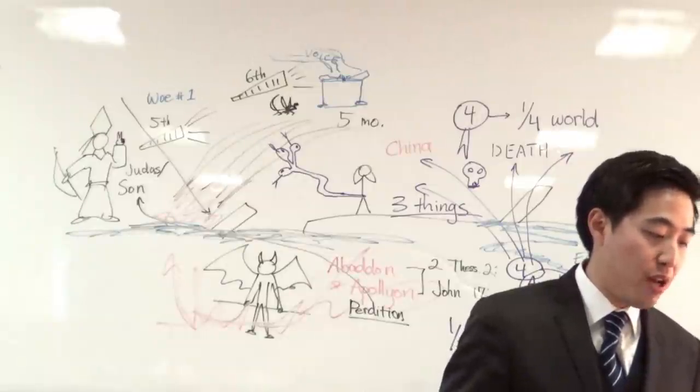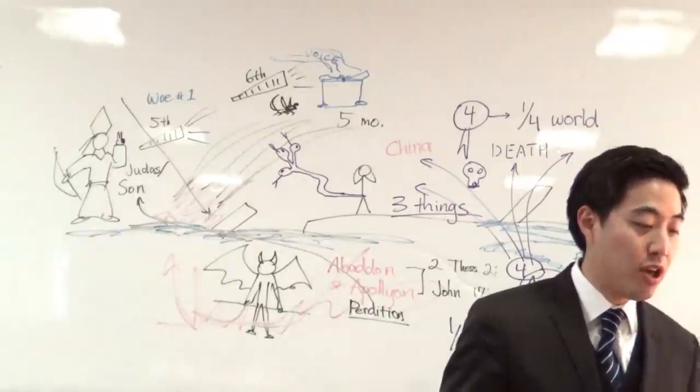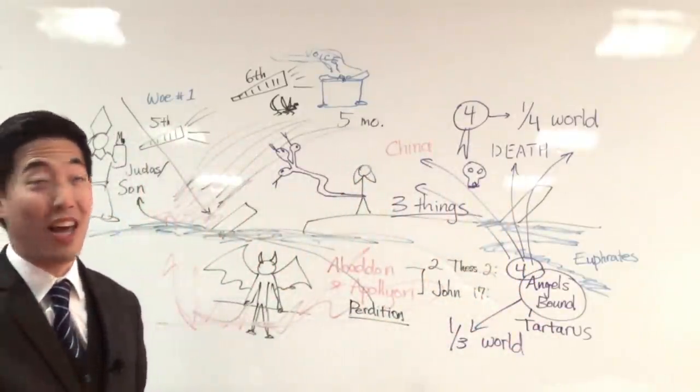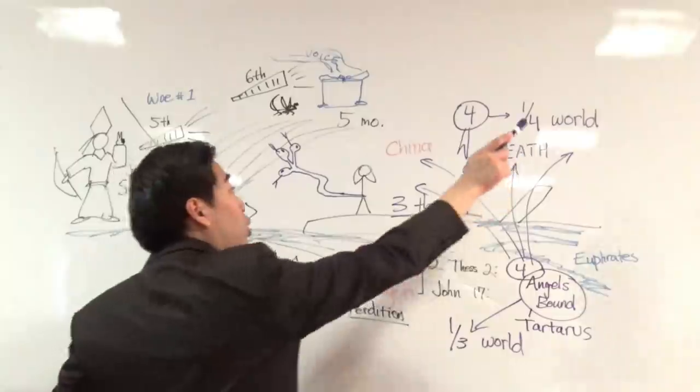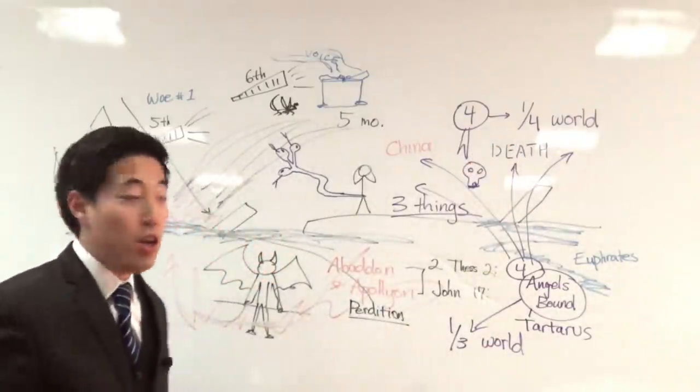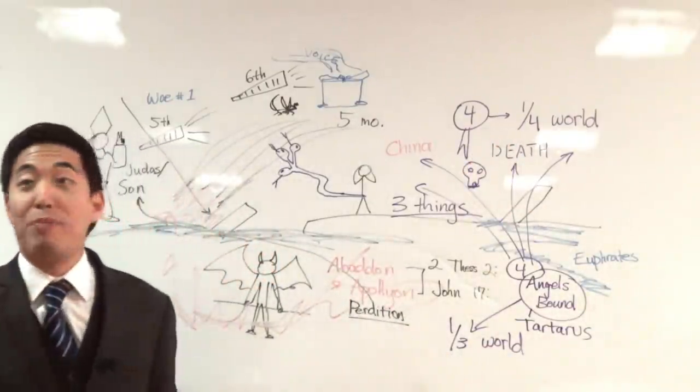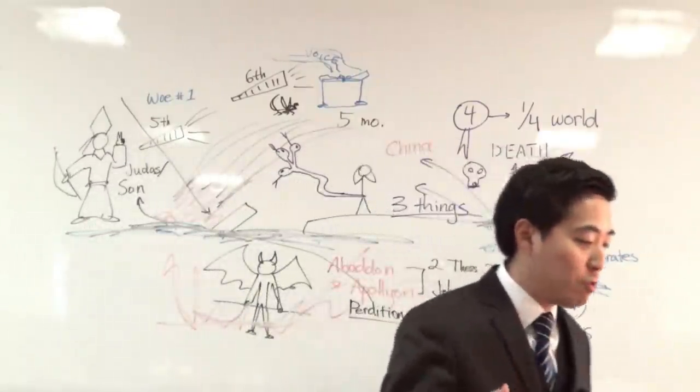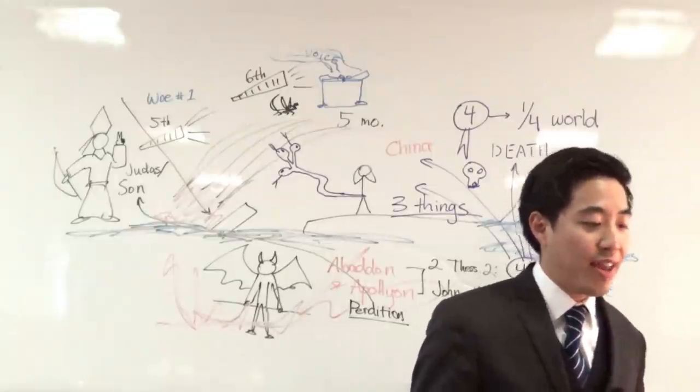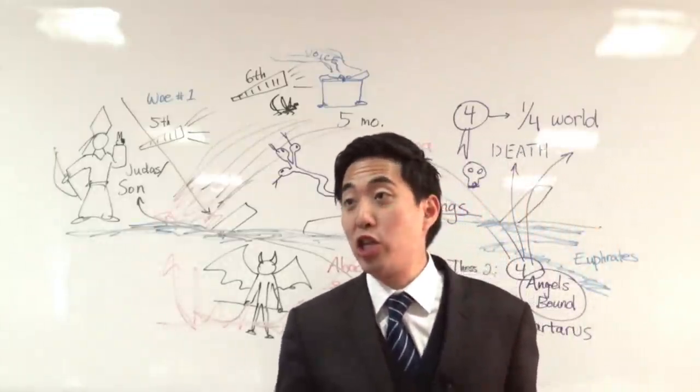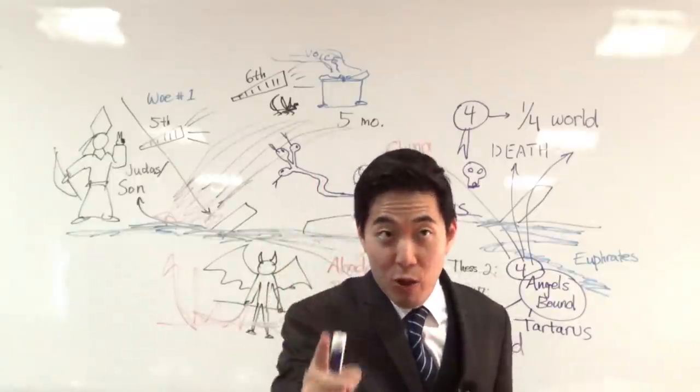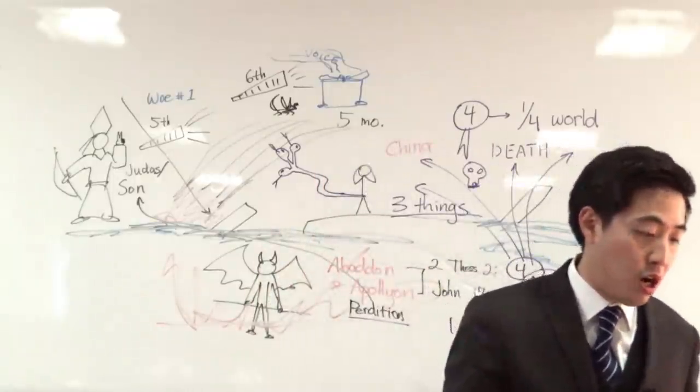Verse 20: And the rest of the men which were not killed by these plagues. Okay, I want you to pay attention now. This is going to be like a sermon. You got a quarter wiped out from God, you got a third more wiped out from God. So the remaining people who were not killed by these plagues, you would think that by now you should get the memo and I'm going to fear God and repent and get right with you, Jesus. You're wrong.